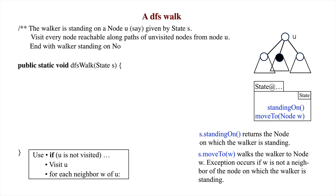Third, and this is important, we must state where the walker will be standing when the method terminates. The walker will be standing where it started, on node u.